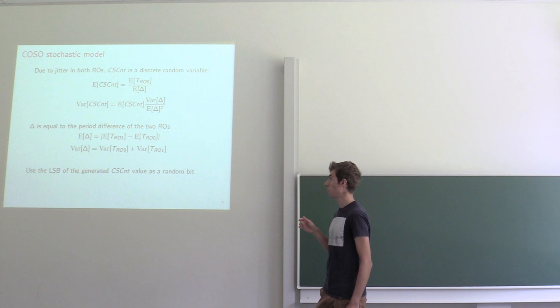And your expected value is inversely proportional to the period length offset which is given by the delta.